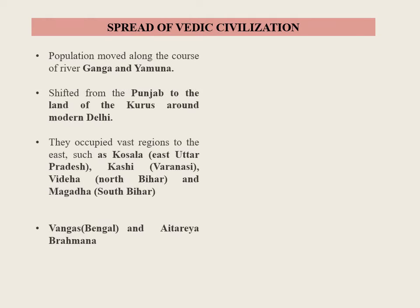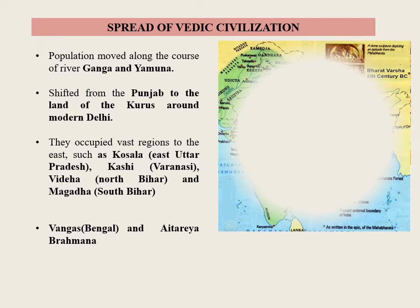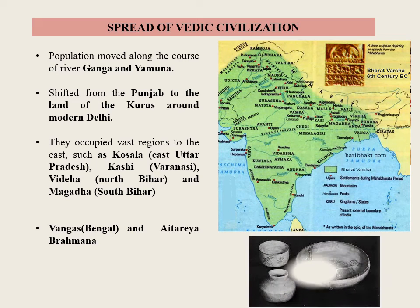Vedic civilization spread to many regions in India. As population increased, the Aryans moved along the course of rivers Ganga and Yamuna. The scene shifted from Punjab to the land of Kurus, the region around modern Delhi. Further, they occupied vast regions to the east such as Kosala in East Uttar Pradesh, Kashi (Varanasi), Videha, North Bihar, Magadha, and South Bihar. The name Vanga's Bengal occurs in one of the Aranyakas.